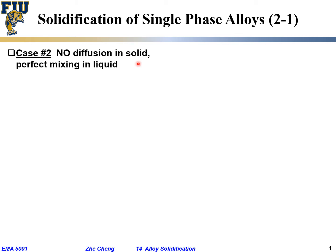A practical example: you are doing solidification of an alloy with reasonably fast cooling and efficient stirring. For polymers, you can put a mechanical stir bar or blade into the liquid to stir it. For metals, there are shaking or other mechanisms to stir the melt. So this is like fast cooling with stirring in the liquid, but within the solid there is no diffusion.